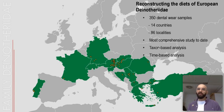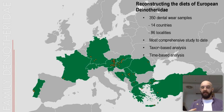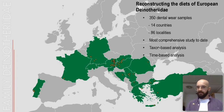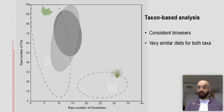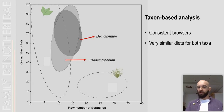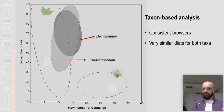For my analysis, I reconstructed the diets of European Dinotheridae including approximately 350 dental wear samples from 86 localities in 14 European countries — to date the most comprehensive palaeocological study for the family Dinotheridae. I performed both a taxon-based and a time-based analysis. The taxon-based analysis confirmed results consistent with the literature: both Prodeinotherium and Deinotherium appear to be browsing taxa, with data floating very close to the browsing morphospace. Their two confidence ellipses overlap substantially, meaning the two taxa had very similar dietary habits.